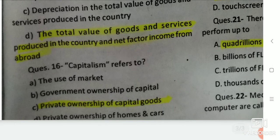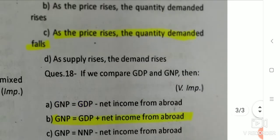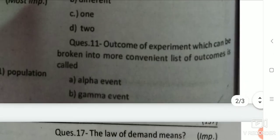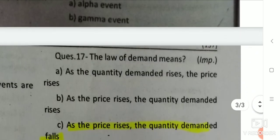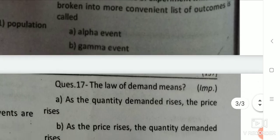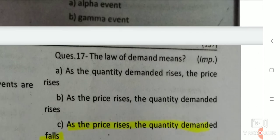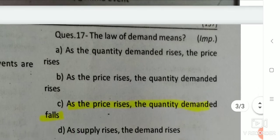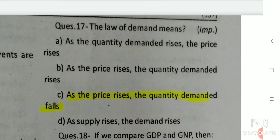Q15: Capitalism refers to — the answer is private ownership of capital goods. Q16: The law of demand means — as the price rises, the quantity demanded falls.